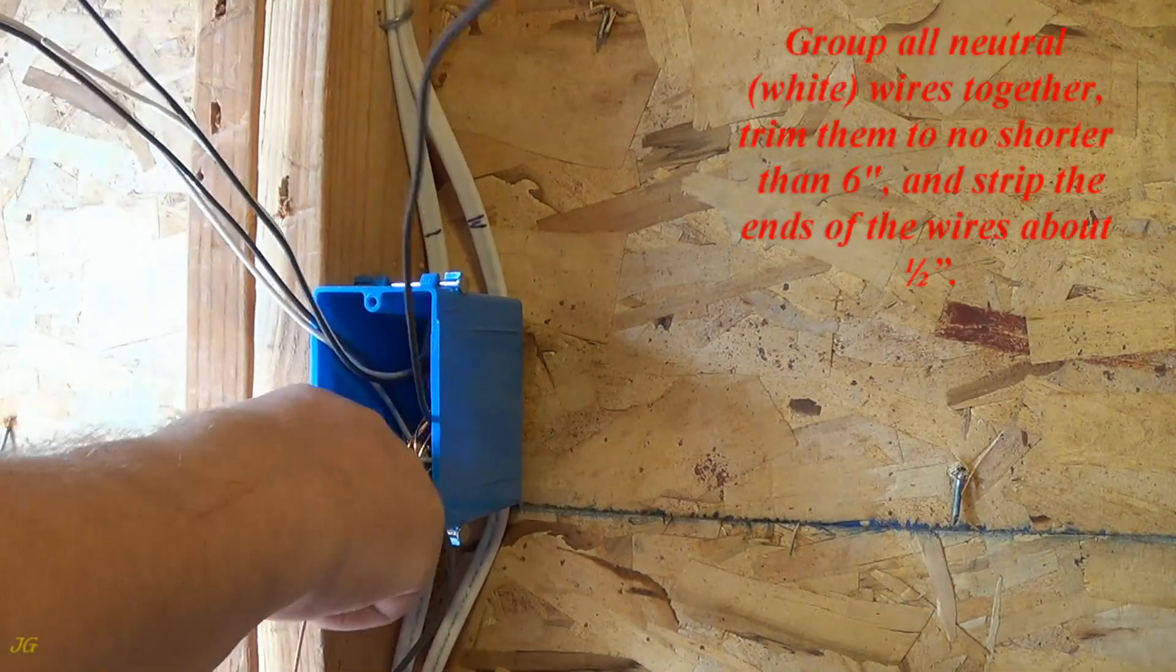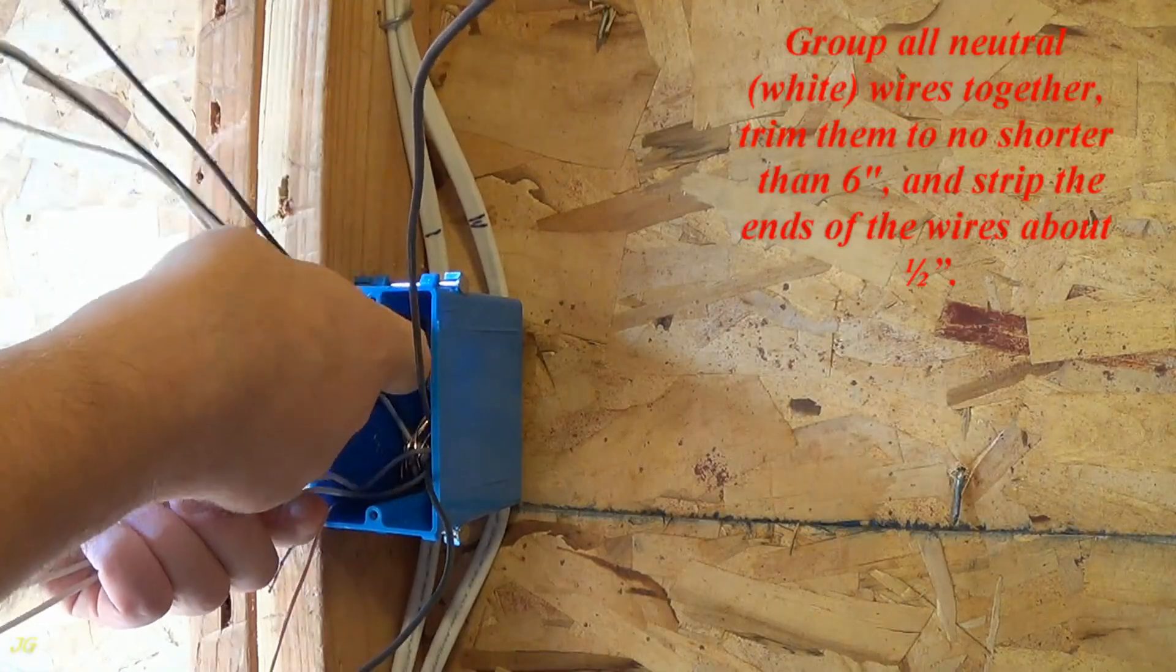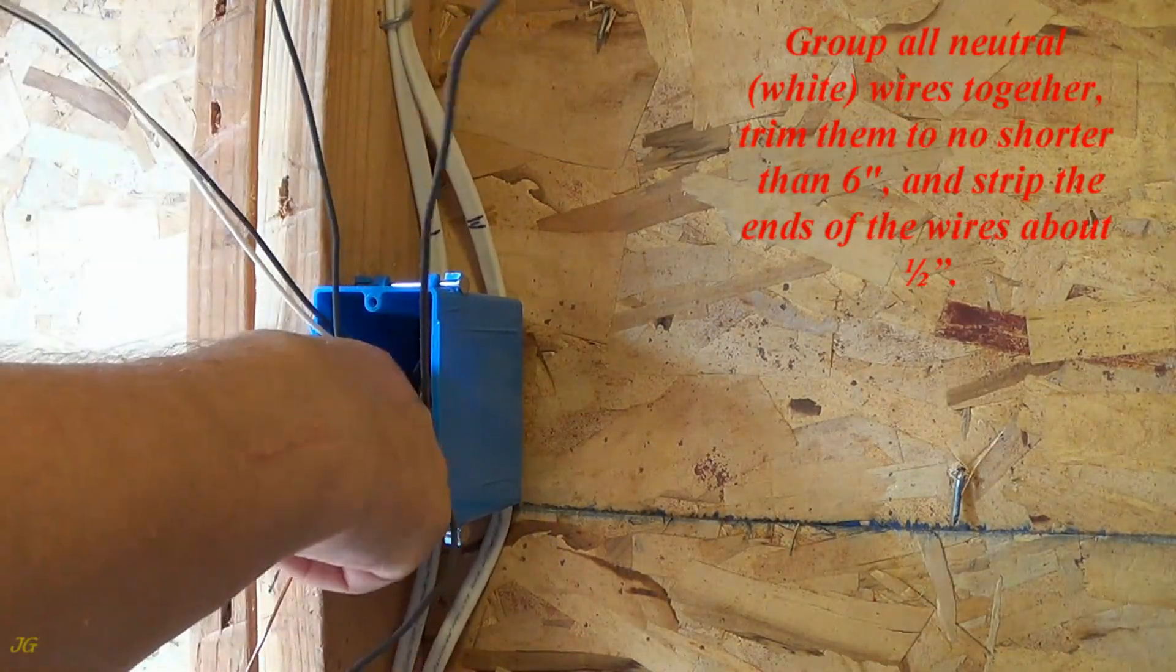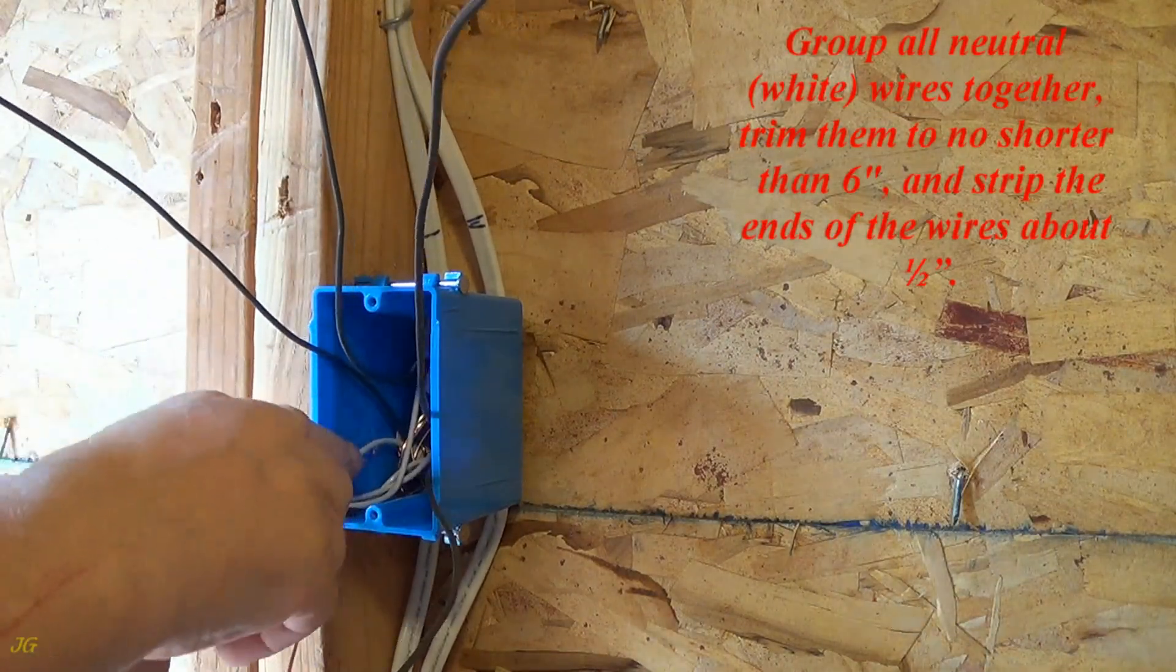Group all neutral, white, wires together, trim them to no shorter than 6 inches, and strip the ends of the wires about one half inch.